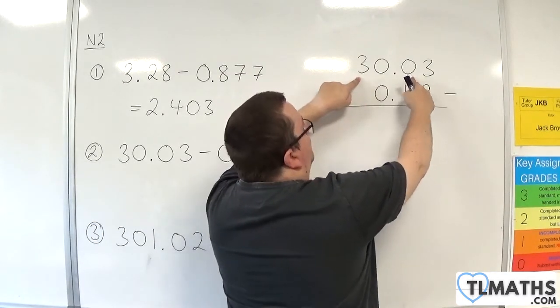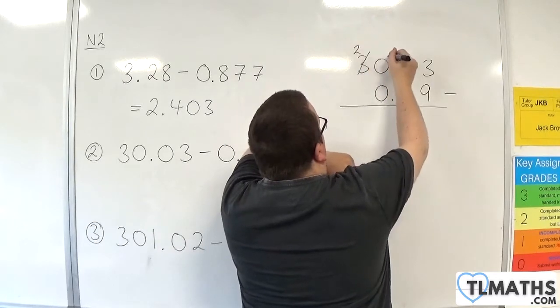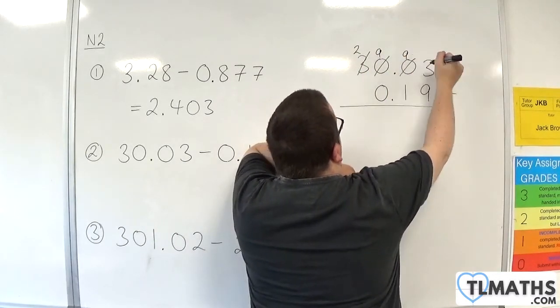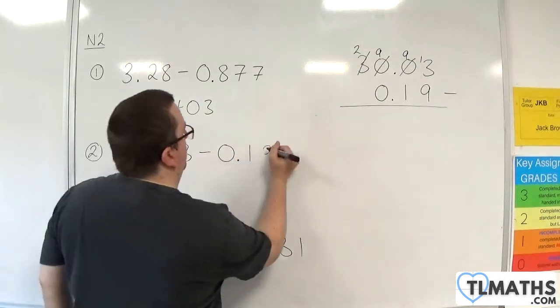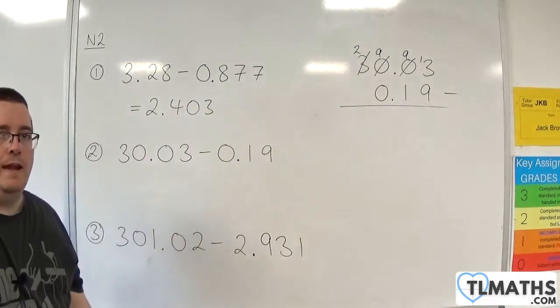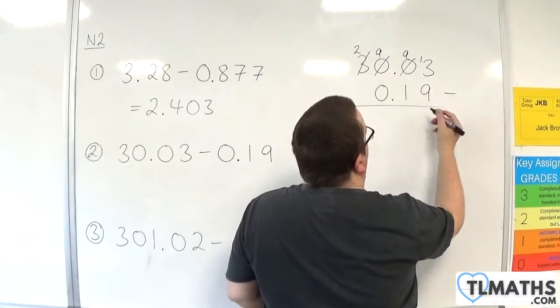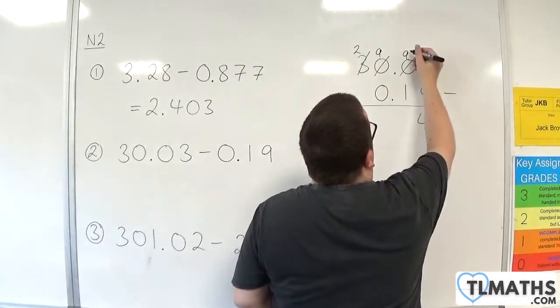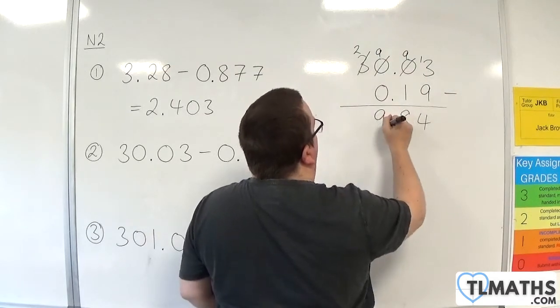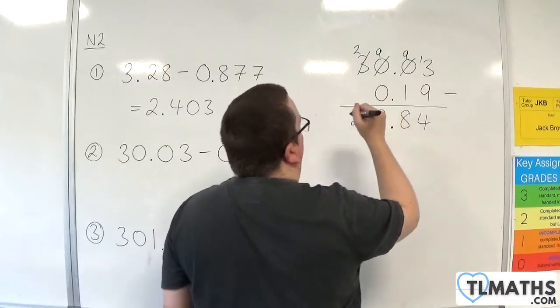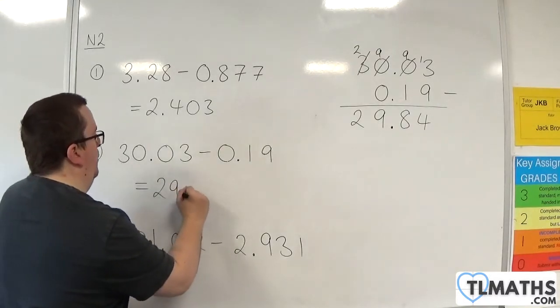And I need to borrow 1 from 300, which means this is going to become 299, and the 3 becomes 13. So essentially, you need to work your way along the line. 13 take away 9 is 4. 9 take away 1 is 8. Bring the decimal point down. 9 take away 0 is 9. 2 take away nothing is 2. So we get 29.84.